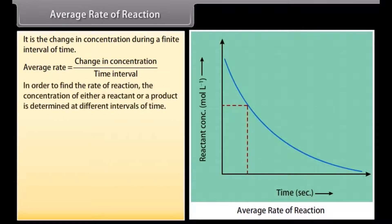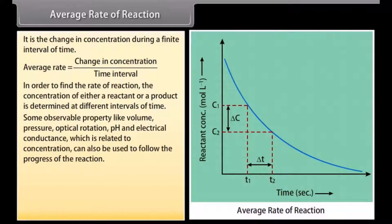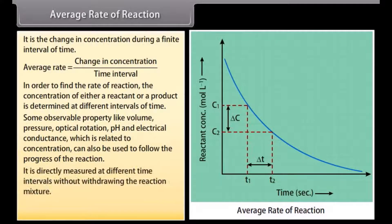In order to find the rate of reaction, the concentration of either a reactant or a product is determined at different intervals of time. Some observable properties like volume, pressure, optical rotation, pH, and electrical conductance, which are related to concentration, can also be used to follow the progress of the reaction. It is directly measured at different time intervals without withdrawing the reaction mixture. Average rate is equal to negative delta C upon delta T.